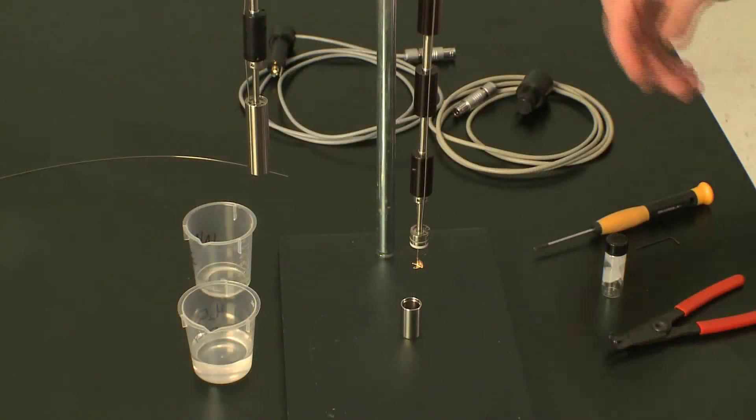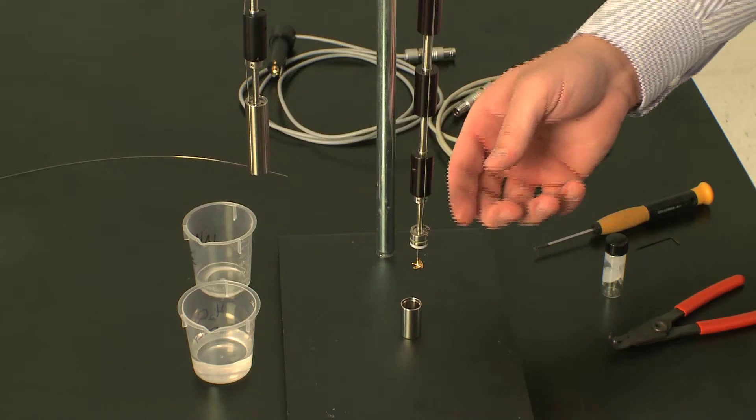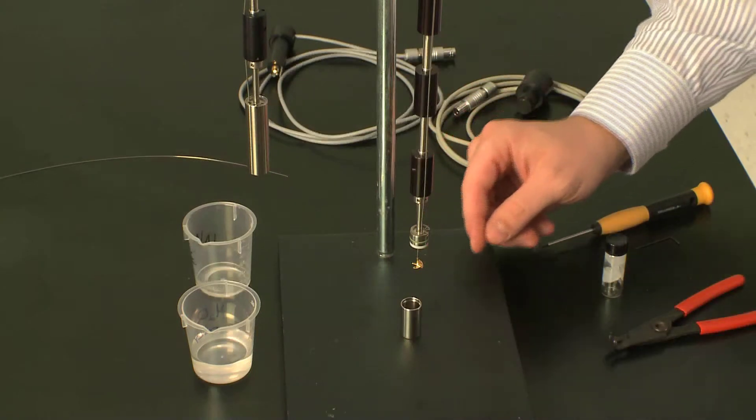In this TA Tech Tip, we're going to be preparing the ITC ampule for an experiment for the TAM calorimeter. The first part of preparing the ITC ampule for an ITC experiment in the TAM is to adjust your stirrer height.